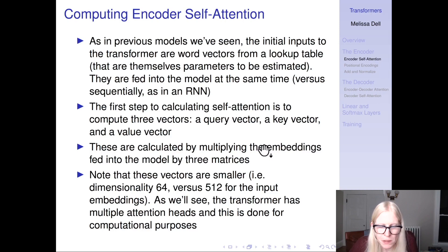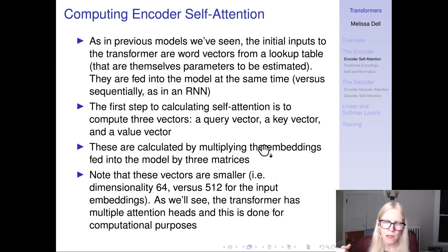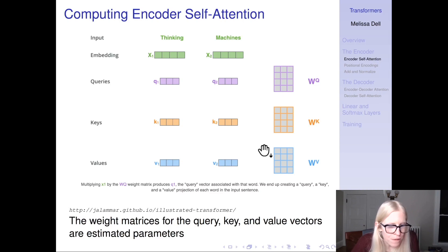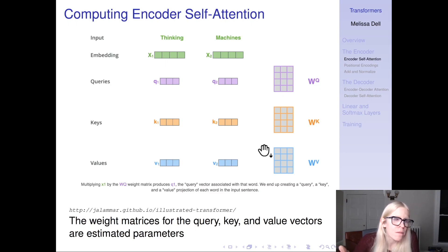Note that these vectors are going to be smaller. The input embeddings in a transformer language model are often of dimension 512. In larger models they can be larger; in lightweight models, smaller. These vectors are going to be smaller — as we'll see, the transformer is going to have multiple attention heads, and we want them to be smaller for computational purposes. We have an input 'thinking machines' and embeddings of those tokens. Then we have these three matrices — learned parameters for the query, the key, and the value — and we multiply those by x1 and x2 to get the query vectors, key vectors, and value vectors.